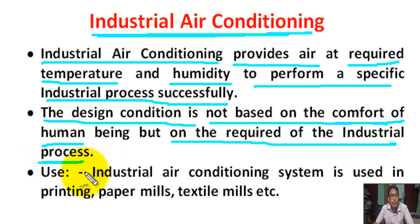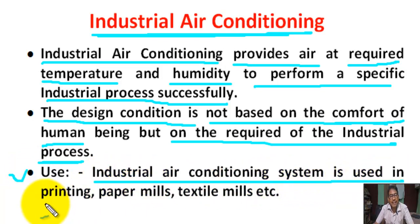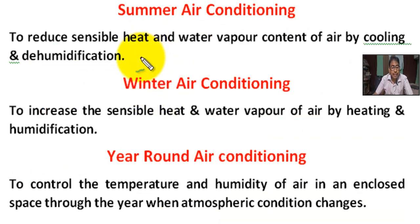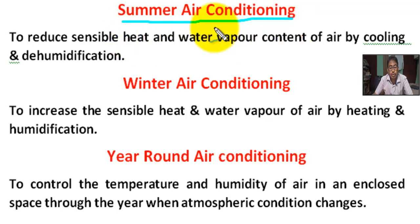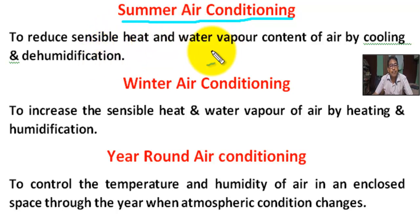Industrial air conditioning systems are used in printing, paper mills, textile mills, etc. What is summer air conditioning? In summer, the outside condition is hot, therefore there will be a continuous transfer of sensible heat — that means temperature as well as moisture from outside to the building.